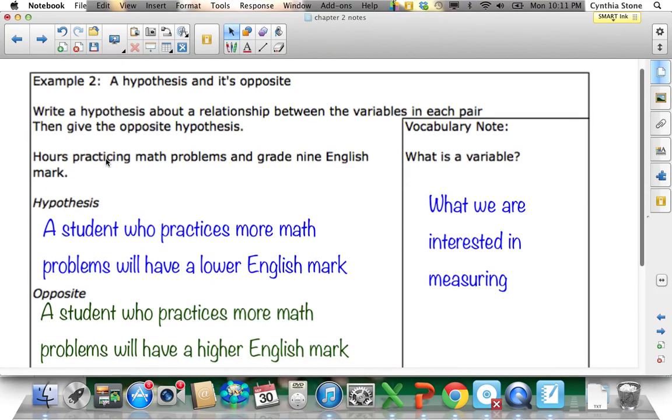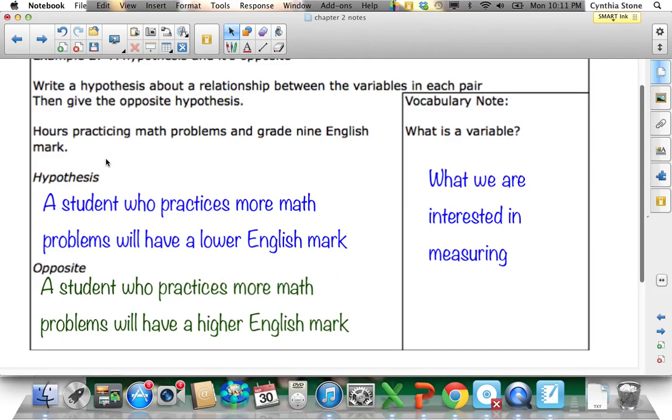Hypothesis and its opposite. So write a hypothesis about a relationship between the variables in each pair, then give the opposite. So the variables are what we're interested in measuring, and that's hours practicing math problems and grade 9 English mark. So these are a pair of variables. The hypothesis might be a student who practices more math problems will have a lower English mark. And then the opposite would be a student who practices more math will have a higher English mark. It's as simple as that. That's a hypothesis and opposite.